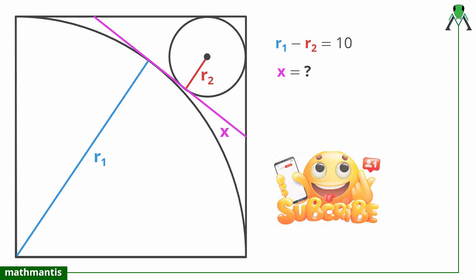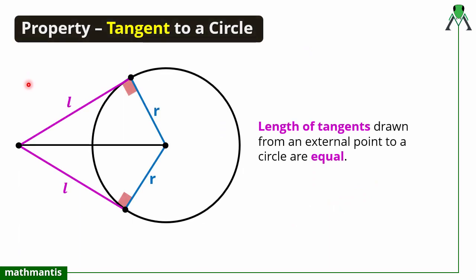To solve this question I will use the property of tangent of a circle. From an external point to a circle we can draw two tangents, and the length of these two tangents are always equal. This property can be easily proved by the congruence of two triangles — a right angle is present, the radius length is common, and the hypotenuse is also common. So because of that, these two lengths from the external point will also be equal.